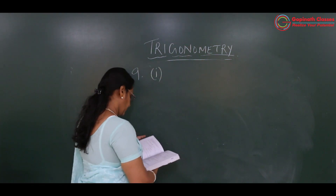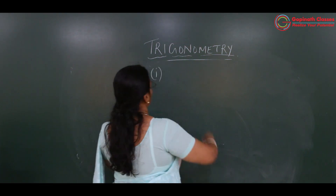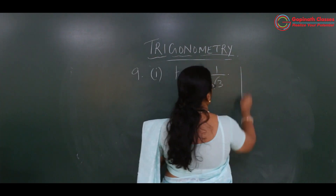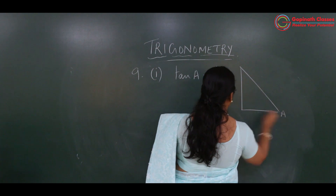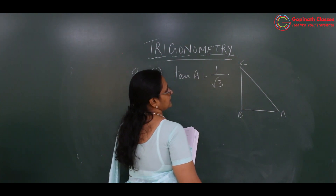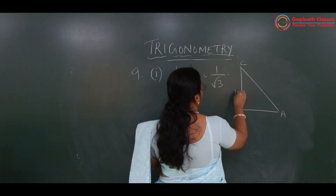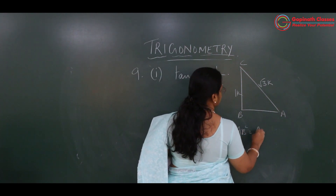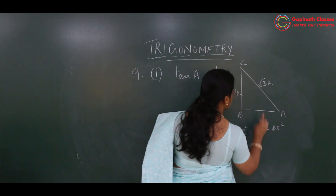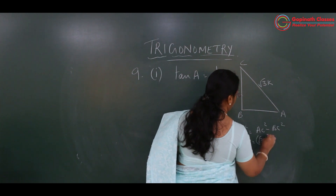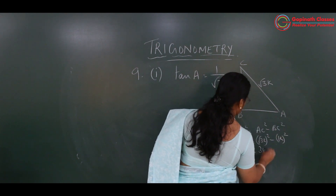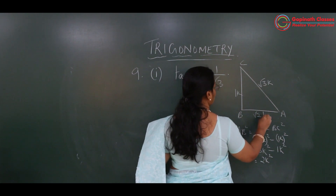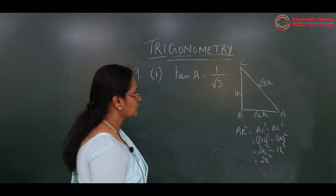The first sub-question: tan A is equal to 1 upon root 3. As usual we draw the triangle. Tan is opposite side upon adjacent, so opposite is 1k and adjacent is root 3k. AB square is AC square minus BC square: root 3k square minus 1k square equals 3k square minus 1k square equals 2k square. So AB equals root 2 times k. We now have all three sides.